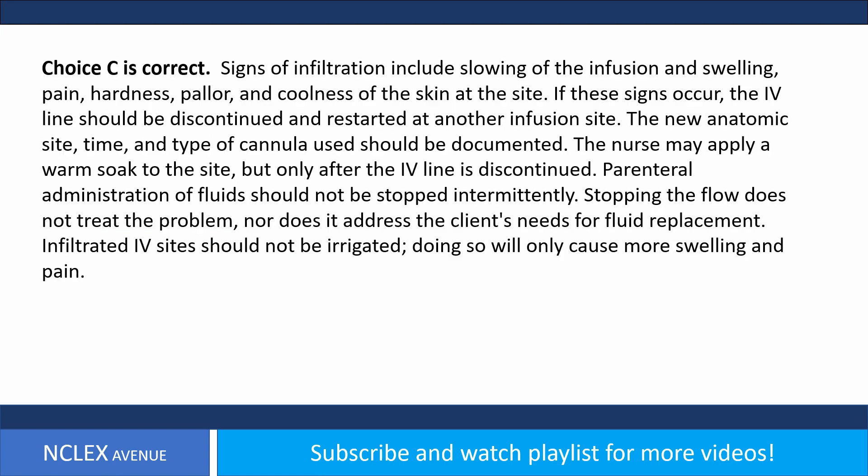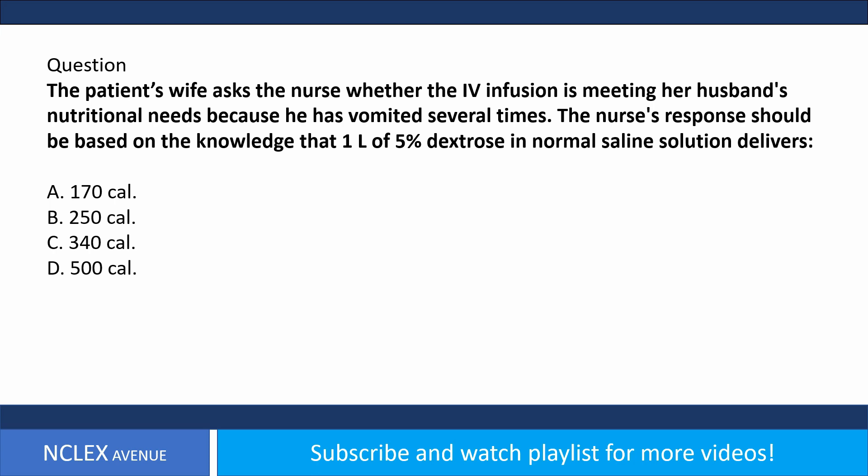Answer choice C is correct. Signs of infiltration include slowing of the infusion and swelling, pain, hardness, color change, and coolness of the skin at the site. If these signs occur, the IV line should be discontinued and restarted at another site. The new anatomic site, time, and type of cannula used should be documented. A warm soak may be applied, but only after the IV line is discontinued. Stopping the flow intermittently does not treat the problem, and irrigating an infiltrated IV site will only cause more swelling and pain.